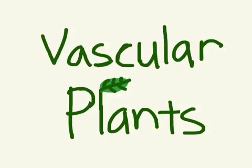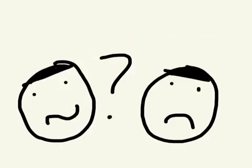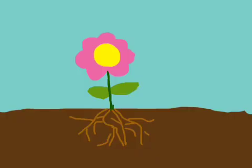Vascular plants. What are vascular plants anyway? Vascular plants are a type of plant with a system transporting nutrients to its roots, stems, and leaves.